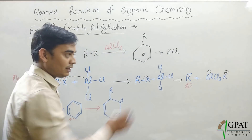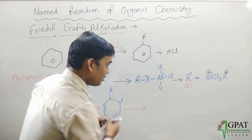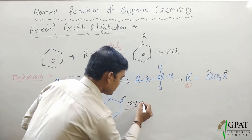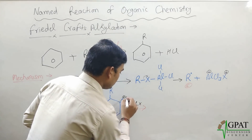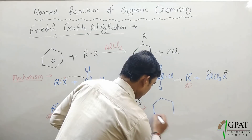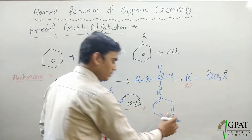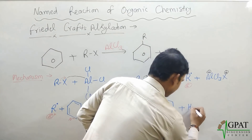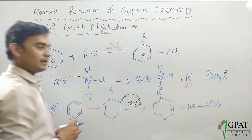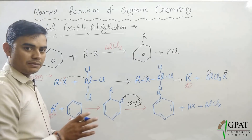To restore aromaticity, the hydrogen at that position leaves. The hydrogen ion (H⁺) is released and picked up by the AlCl₄⁻ group. In the next step, aluminium chloride releases the hydrogen as HX (hydrochloric acid), and our Lewis acid AlCl₃ is regenerated.